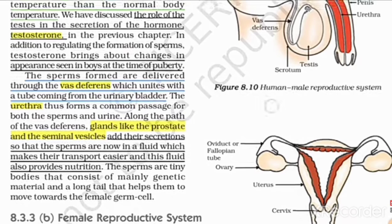Along the path, the seminal vesicles add their secretion. The sperm combines with this liquid, which makes transport easier and provides nutrition. The sperms are tiny bodies that consist mainly of genetic material and have a long tail that helps them move towards the female germ cell. This is the male reproductive system.